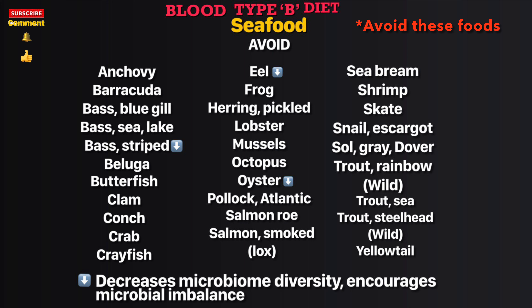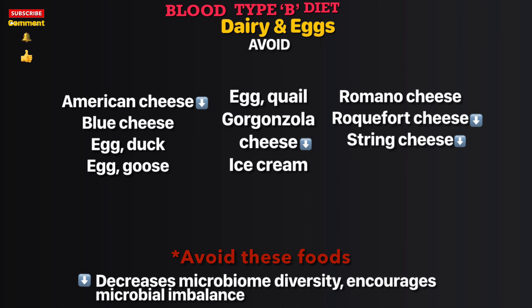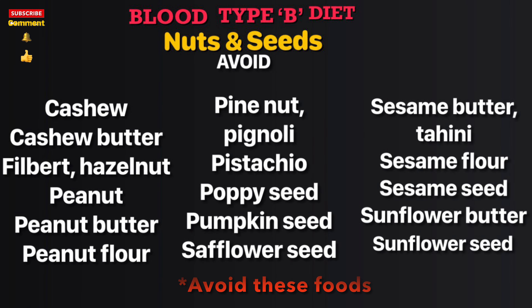Also avoid: rainbow wild trout, sea trout, steelhead wild, and yellowtail. Dairy and eggs to avoid: American cheese, blue cheese, duck egg, goose egg, quail egg, gorgonzola cheese, ice cream, romano cheese, rouffy four cheese, and string cheese. Nuts and seeds to avoid include: cashew, cashew butter, filbert, and hazelnut.